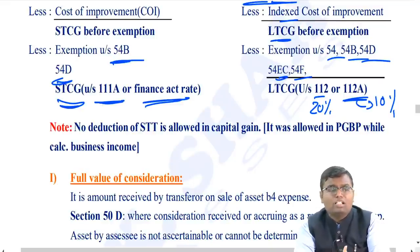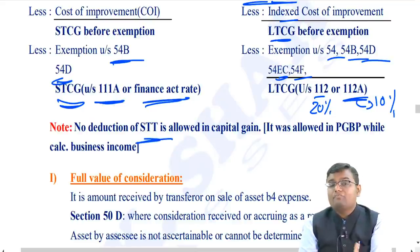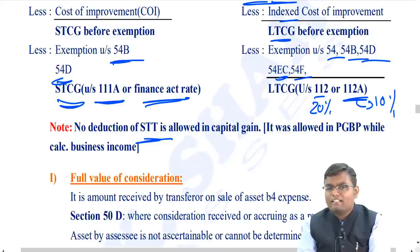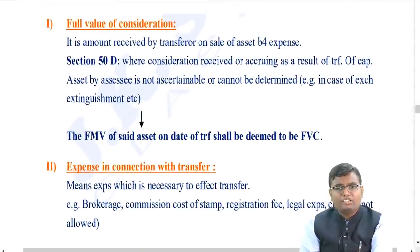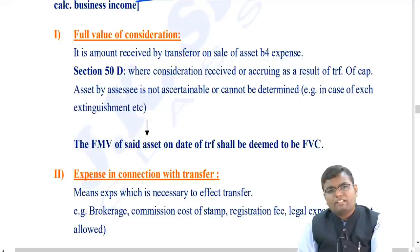Full value of consideration is the gross amount before deducting any expenditure. Where it cannot be determined - such as in an exchange or conversion of capital asset into inventory - the fair market value on the date of transfer becomes the deemed full value of consideration. Expenses deductible in connection with transfer include brokerage, commission, stamp duty, registration fees, and legal expenses. Cost of acquisition includes all expenses incurred at the time of purchase.